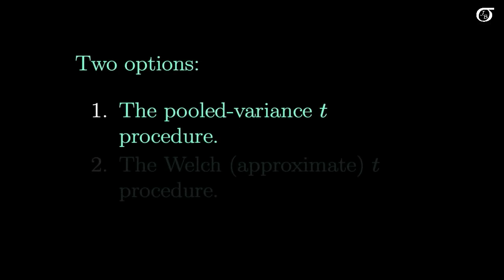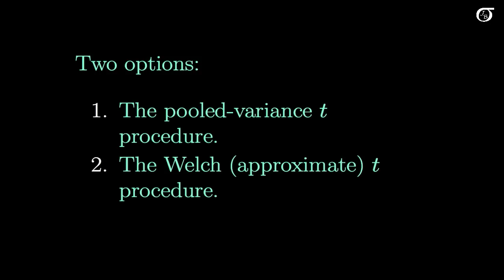We have a couple of workarounds. If we're comfortable assuming normality, we have two options. First, we can use the pooled variance t procedure, which requires the additional assumption that the population variances are equal. Second, if we don't feel comfortable assuming equal population variances, we can use an approximate procedure sometimes called the Welch t procedure — not truly exactly a t procedure, but approximately so. If normality is not reasonable, there are also nonparametric procedures available. We'll look at these in more detail later.